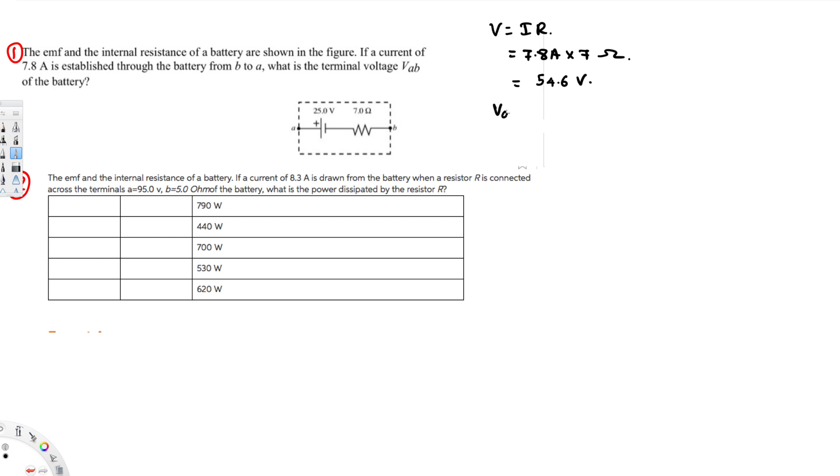Vab is going to be equal to 25 voltage minus this one, 54.6 voltage, and that's going to give us negative 29.6 volt. That's going to be the terminal vab of the battery and that's how we do this.